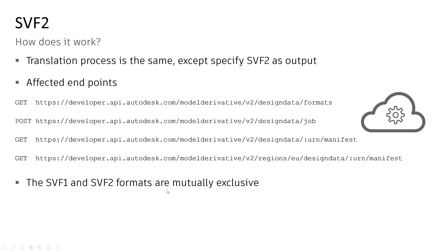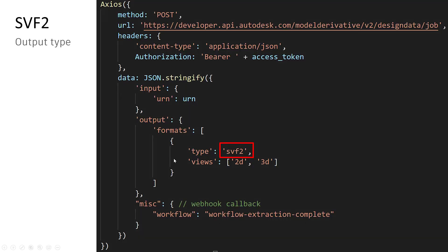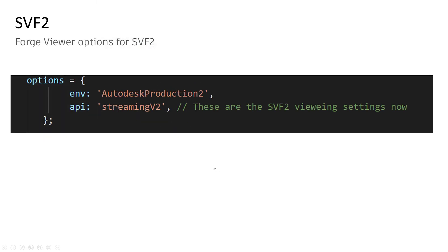How does it work? The translation process is the same, and the affected endpoints are listed here. One thing to remember is that SVF1 and SVF2 are mutually exclusive — you can only have one at a time. For the endpoints, you're going to produce the output of SVF2 instead of SVF, which is very straightforward. For Forge Viewer options, you're going to specify the updated environment and API values.